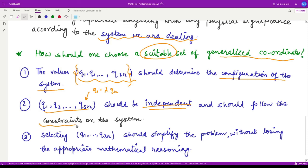it should follow the constraints on the system. Now, what are the constraints on the system? This should be the topic of our next video. We will understand them in the next video. As for now, you just understand that these coordinates should follow all the rules of the system.